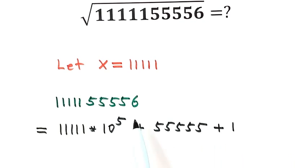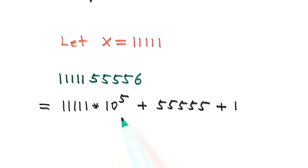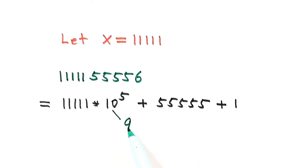So five plus one, that's six. Then for 10 to the power of 5, we can write it as five nines plus one.